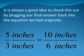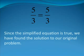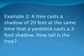It is always a good idea to check this out by plugging our final answer back into the equation we had originally. 5 inches divided by 3 inches equals 10 inches divided by 6 inches. Simplifying, 5 over 3 equals 10 over 6. And 10 over 6 equals 2 times 5 divided by 2 times 3, which equals 5 divided by 3 because the 2's cancel. Thus, we have found our final answer and verified it.